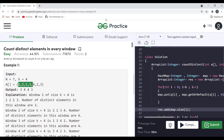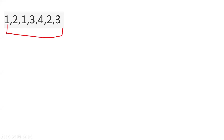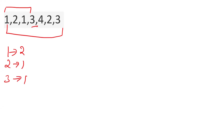Let me explain the logic before we jump into coding. For the first window — say 1, 2, 1, 3 — we maintain key-value pairs in a hashmap: count of 1 is 2, count of 2 is 1, count of 3 is 1. The size of the hashmap gives the number of distinct elements — which is 3 for this first window.